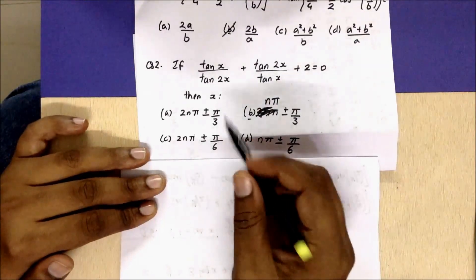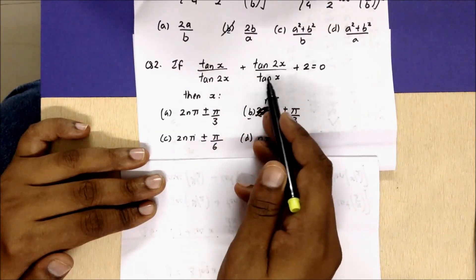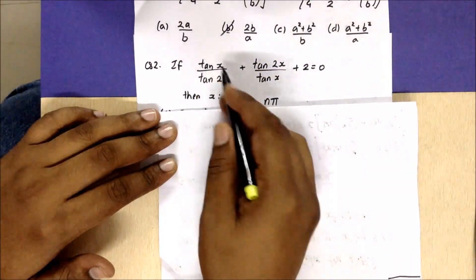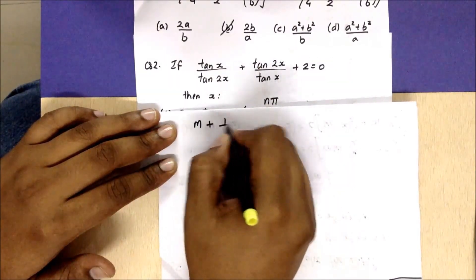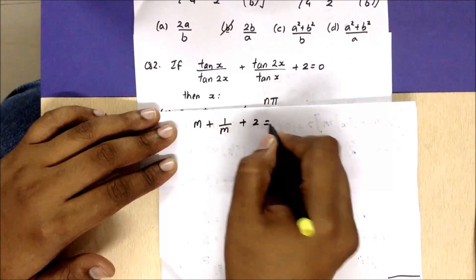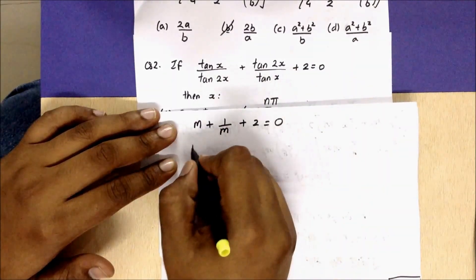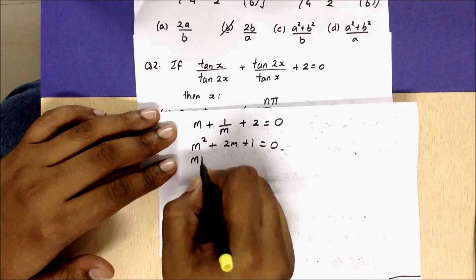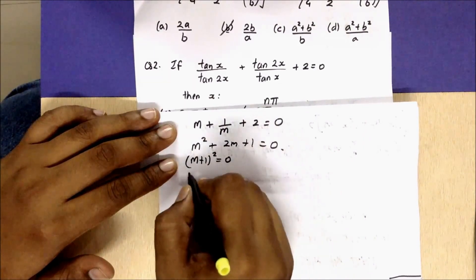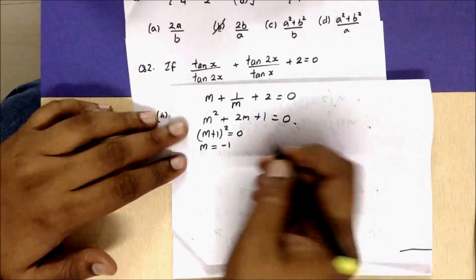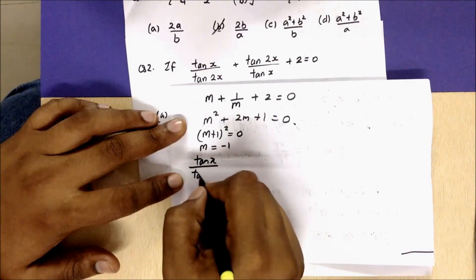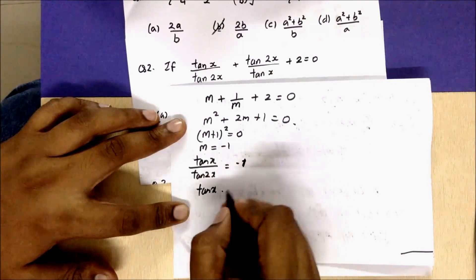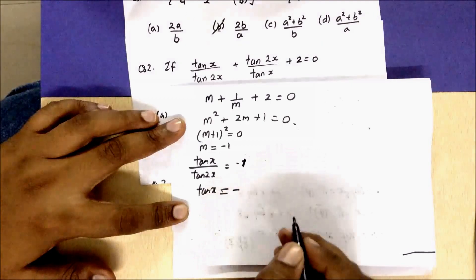The second question gives us tan x / tan 2x + tan 2x / tan x + 2 = 0. Let m = tan x / tan 2x. Then we have m + 1/m + 2 = 0, which gives m² + 2m + 1 = 0, or (m + 1)² = 0, so m = −1. Therefore tan x / tan 2x = −1, meaning tan x = −tan 2x.